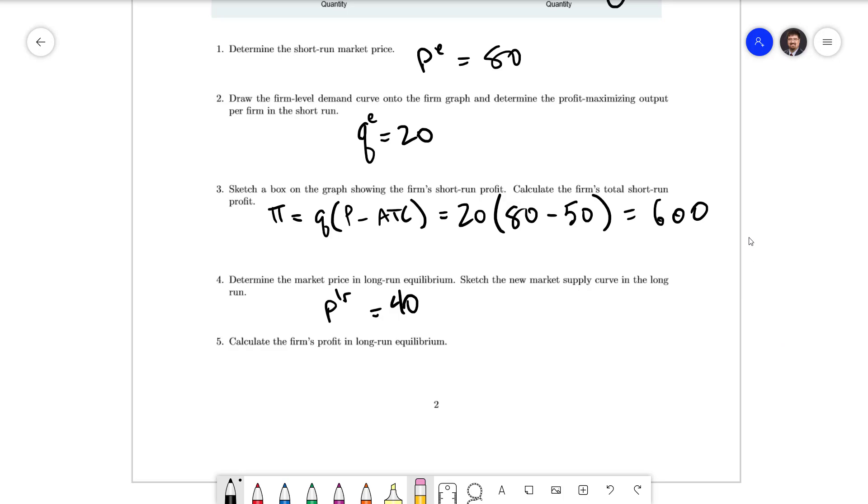In long run equilibrium price equals average total cost. And so profit in the long run is zero and it is always going to be zero in the long run.